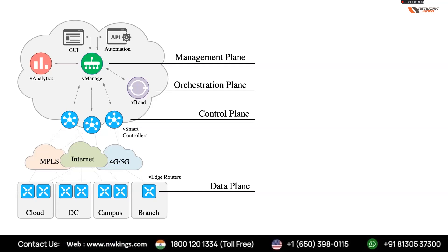The management role is handled by vManage. The routing role, done by the control plane of a router, is taken by vSmart. We also have dedicated vEdge routers on branch sites which transmit data between different sites. There is also an orchestration plane which authenticates all devices.